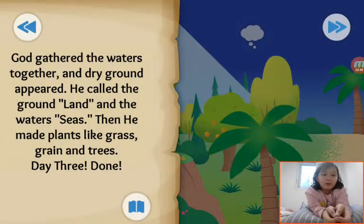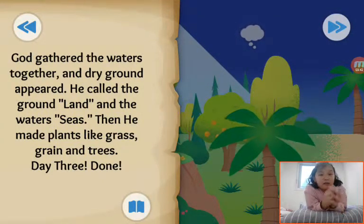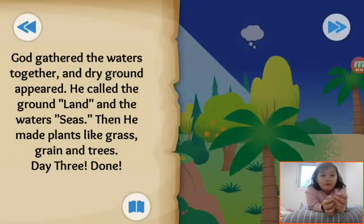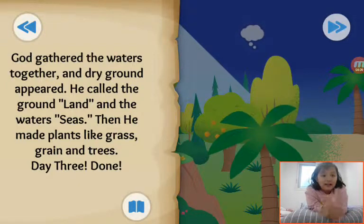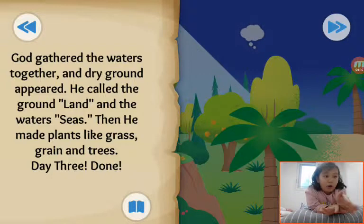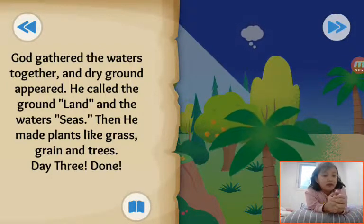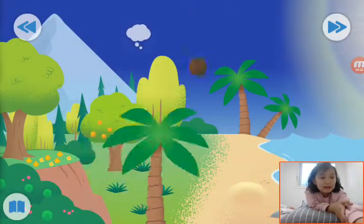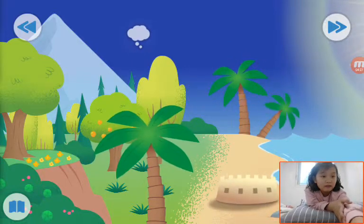God gathered the waters together, and dry ground appeared. He called the ground land, and the waters seas. Then He made plants like grass, grains, and trees. Day three, done! So He separated the water, and He called the dry part land. And He made plants and grass and many trees.